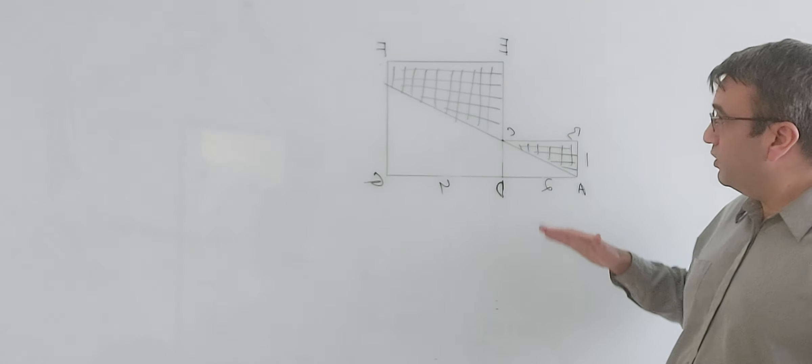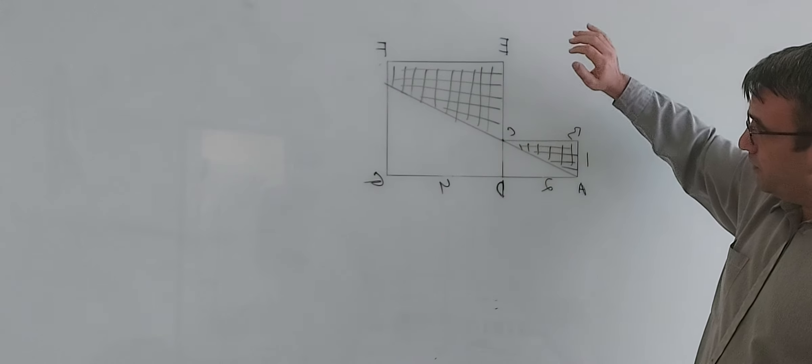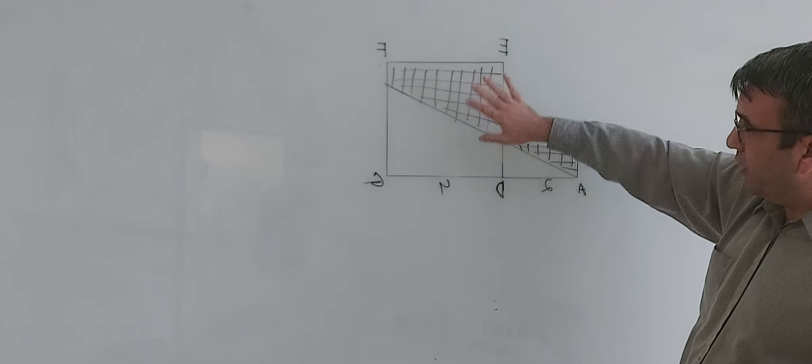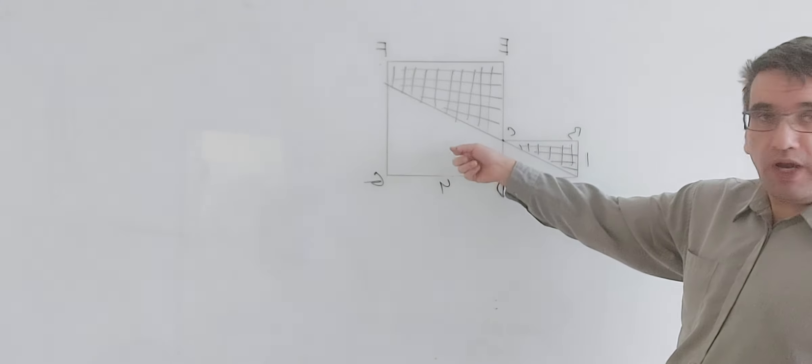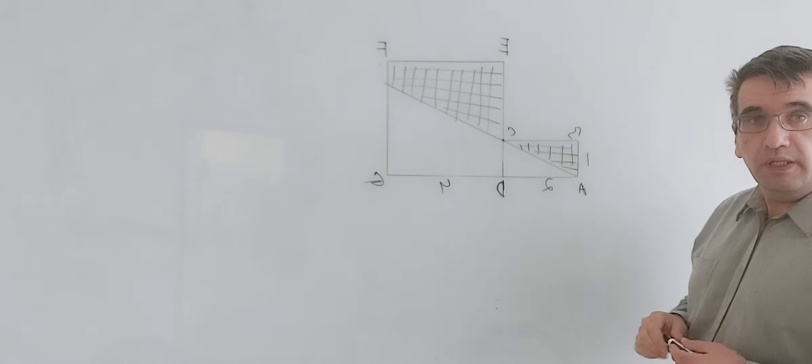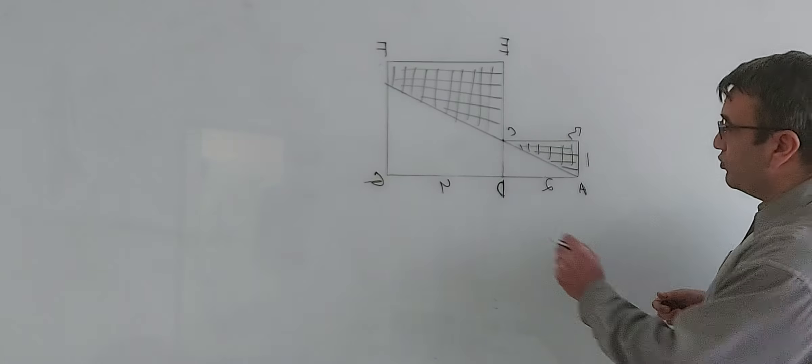So how are we going to do it? We want to calculate the full area of both shapes, the rectangle and square, and then we're going to subtract the white area from there. Let's try.